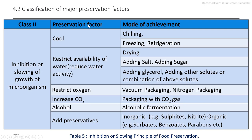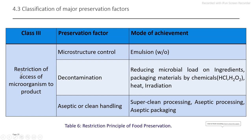Third preservation factor group: restriction of access of microorganisms to the product. This can be achieved by microstructure control — that is the emulsion process — then decontamination to reduce the contamination, where they are properly processed, properly packaged, and proper processing techniques are used. Then aseptic or clean handling process — super clean processing, that is aseptic packaging — or good hygienic practices which are used for the food.